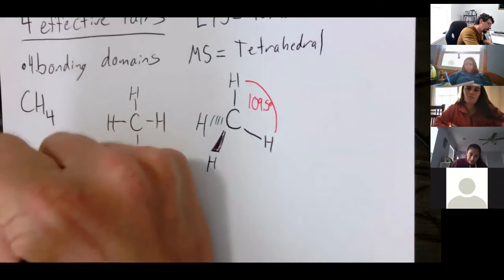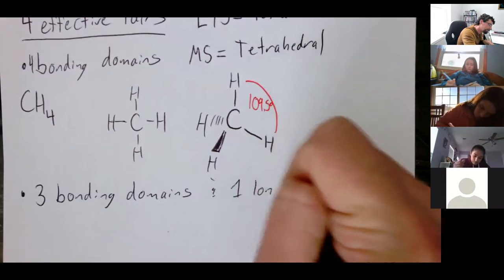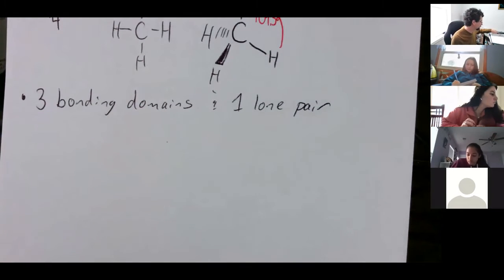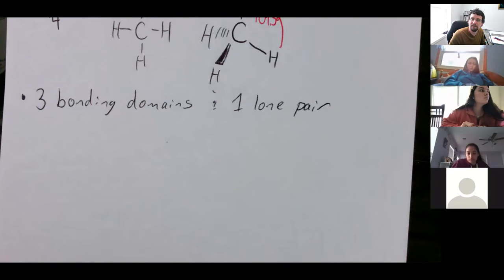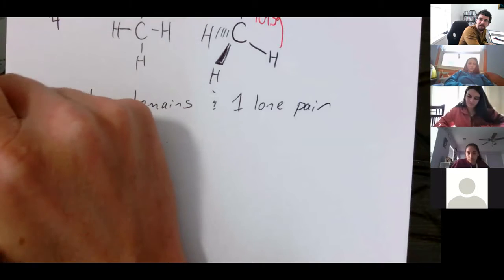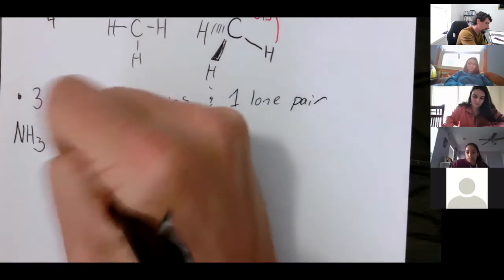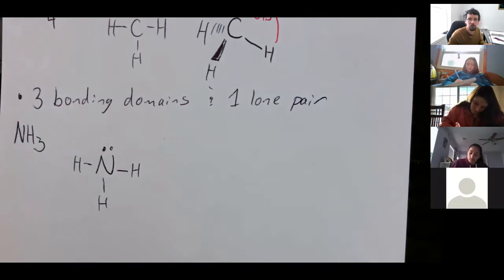Now let's go to three bonding domains and one lone pair. Could you think of a molecule that has three bonding domains and one lone pair? How about ammonia — NH3. It looks almost like methane, except we replace the carbon with nitrogen and we have a lone pair.